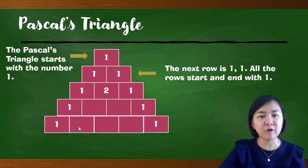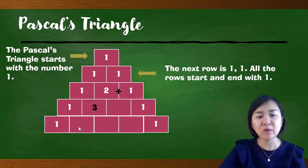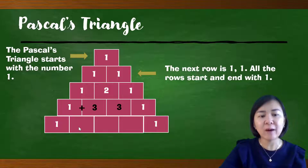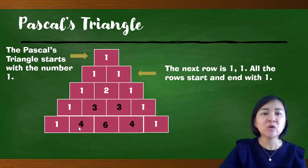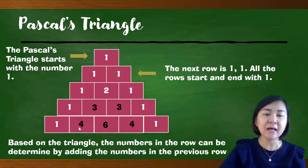How do we determine the answer for the next row? To get the next row, we add the numbers from the previous row. For example, 1 plus 2 gives us 3, and 2 plus 1 gives us 3 as well. For the following row: 1 plus 3 gives 4, 3 plus 3 gives 6, and 3 plus 1 gives 4. Based on the triangle, the numbers in each row are determined by adding the numbers in the previous row.